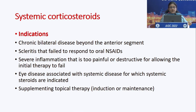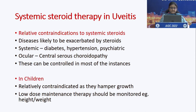Indications include chronic bilateral diseases beyond the anterior segment, scleritis that has failed to respond to NSAIDs, severe inflammation too painful or destructive for initial therapy to fail, eye diseases associated with systemic diseases requiring systemic steroids, and supplementing topical therapy. Relative contraindications include diseases exacerbated by steroids — diabetes, hypertension, psychiatric problems — and in ocular terms, pre-existing CSCR.